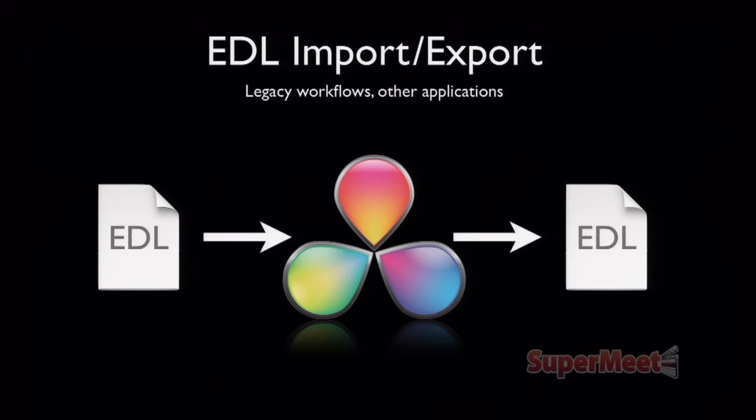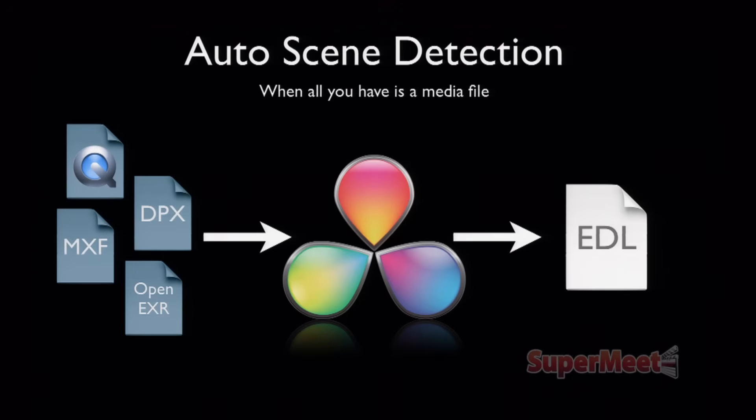If you don't have XML or AAF, I can always take in your EDLs for legacy workflows. There's a new ability to insert additional EDLs in superimposed tracks — so if you've got a three-track project and can only export EDLs, export three EDLs and I can put your project back together. And if all you can give me is a media file — maybe captured from tape — I'll use DaVinci Resolve's automatic scene detection to chop it into consistent shots I can grade. No matter what you give me, I can probably make it work.